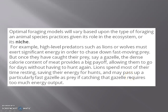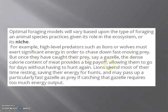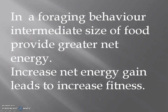Optimal foraging models will vary based upon the type of foraging and animal species, given its role in the ecosystem or its niche. For example, high-level predators such as lions or wolves must exert significant energy in order to chase down fast-moving prey. But once they have caught their prey — such as a gazelle — the dense calorie content of the meat provides a big payoff, allowing them to go for days without having to hunt again. Lions also spend most of their time resting, saving energy for the hunt, and may pass up a particular fast gazelle if catching it requires too much energy output.